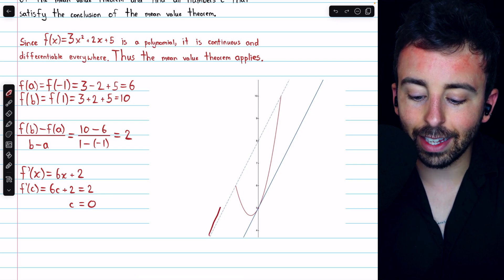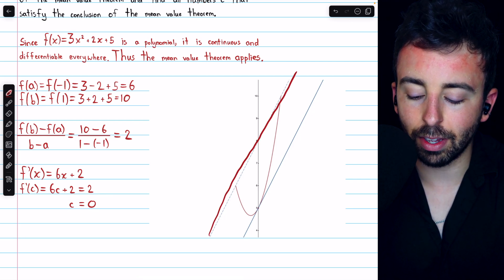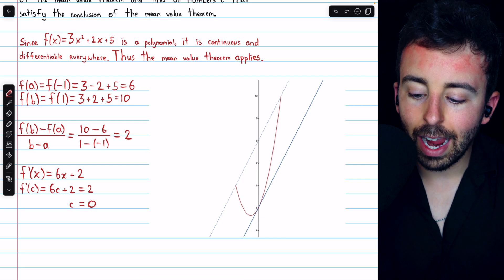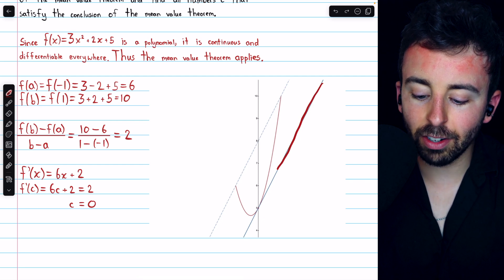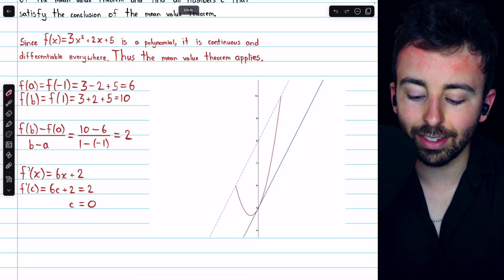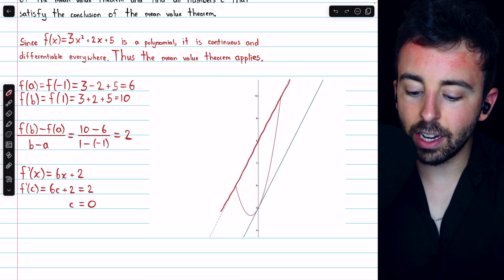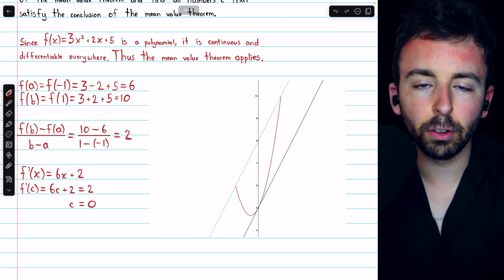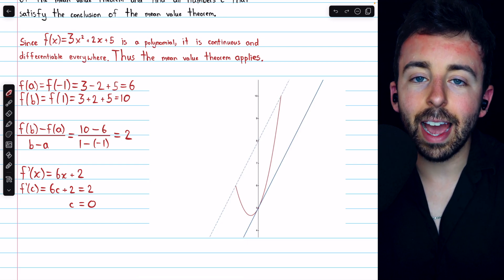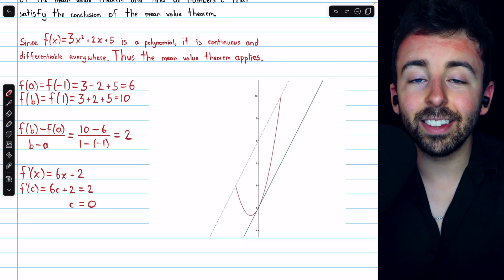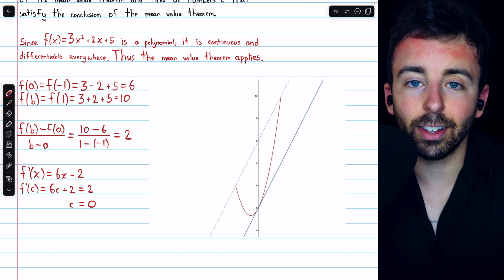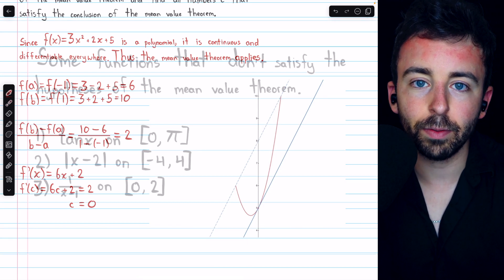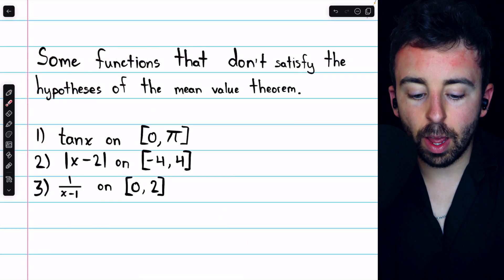That's the secant line through those endpoints, whose slope is the average rate of change. And here's the tangent line at x equals zero. Notice they are parallel — because at this particular point, the average rate of change of the function is the same as the slope of the tangent line, which is, of course, the derivative.